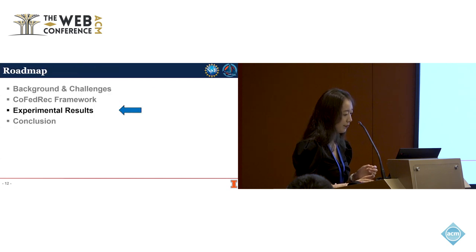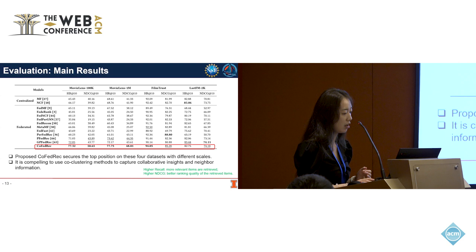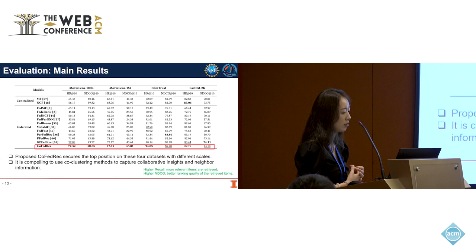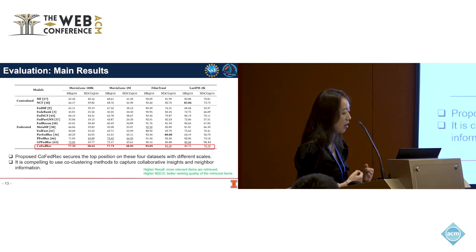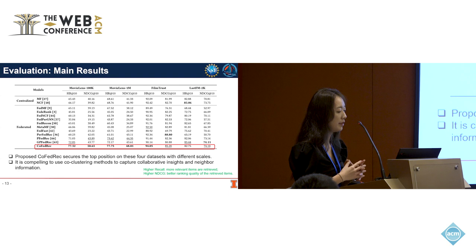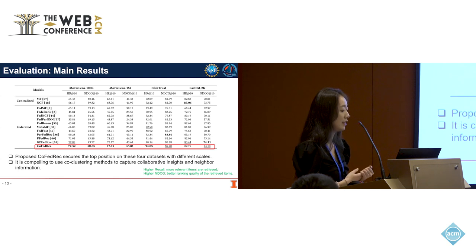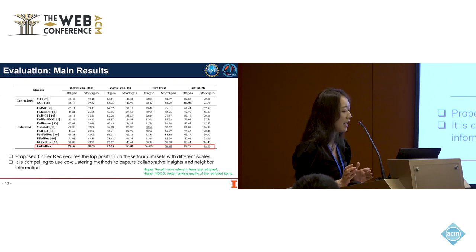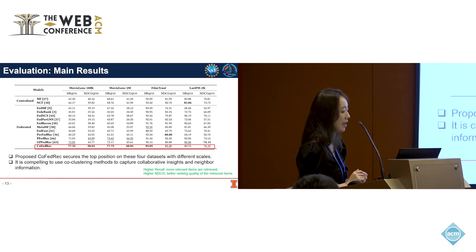Looking at the experiment results table, the improvements made by our method are substantial, and the most notable is its performance on the MovieLens dataset. Looking at FedPerGNN, which lags behind all other baselines, we can conclude that the privacy-preserving nature of federated recommender systems limits graph models from capturing high-order user-item interactions, potentially constraining their full ability in this task. Thus, it is compelling to use co-clustering methods to capture collaborative insights and neighborhood information.